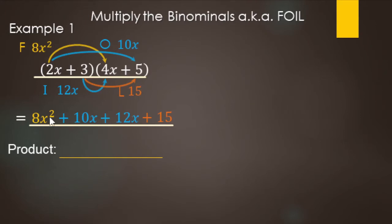Now we just add like terms. For x squared we only have one term — 8x squared. From the inners and outers we have 10x plus 12x, so that's going to make 22x. And then from the lasts we ended up with 15. So many times your inners and outers are going to add up — those will be your like terms, unless there's something unusual going on.